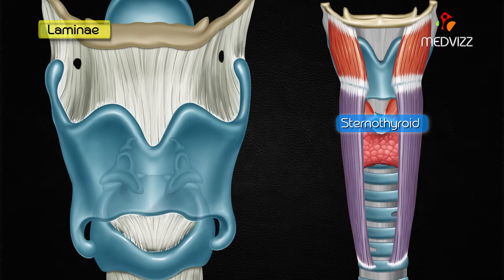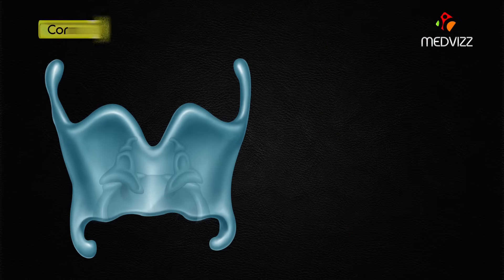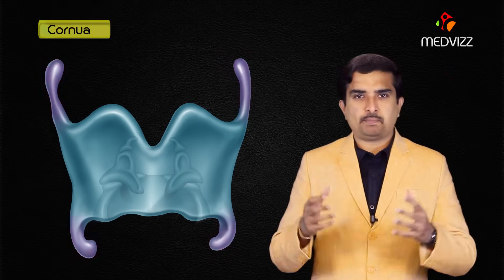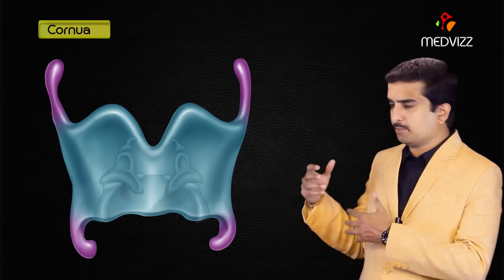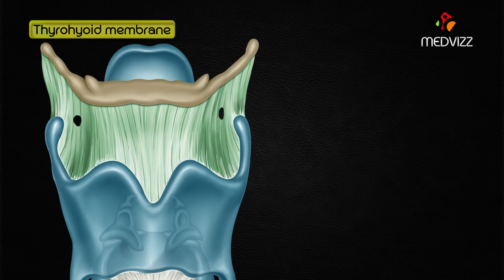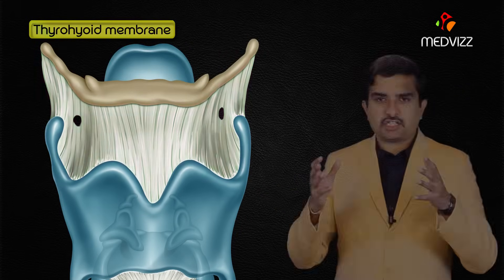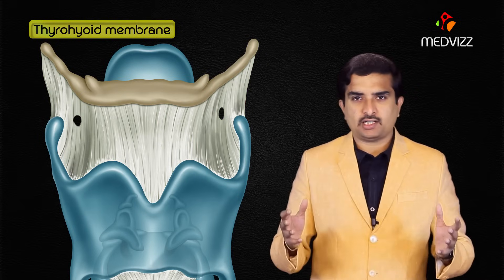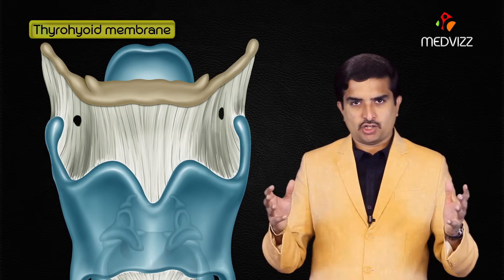The inferior pharyngeal constrictor, sternothyroid, and thyrohyoid muscles all attach to the laminae. The cornua are finger-like projections that extend superiorly and inferiorly from the laminae. The thyrohyoid membrane is a connective tissue membrane which connects the thyroid cartilage to the hyoid bone.